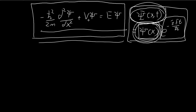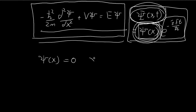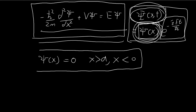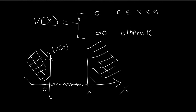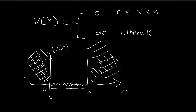For the infinite square well, the first thing to notice is that ξ(x) is equal to 0 when you're outside the well — when x is larger than a or x is smaller than 0. You'll see why this is true later when you encounter the finite square well and take limits, showing the particle must be bound between 0 and a with no chance of being found outside. For now, take this for granted.